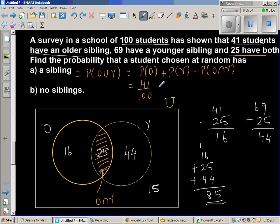41 out of 100 plus probability of Y, that is a student having a younger sibling, is 69 out of 100. When you're doing 41 over 100 plus 69 over 100, you're adding this twice. So you take away this area once, that is 25 over 100.